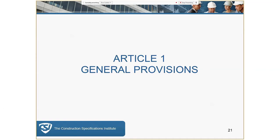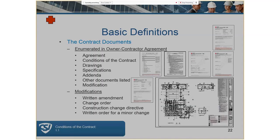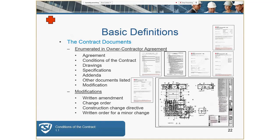Getting into the general provisions of the general conditions — Article 1 is essentially a list of the contract documents. What you do not see on that list are shop drawings, napkin sketches, that sort of thing. The contract documents do include written forms of modifications, which you'll see at the bottom of the slide. Emails might be considered a written amendment, so be careful what you put in writing.